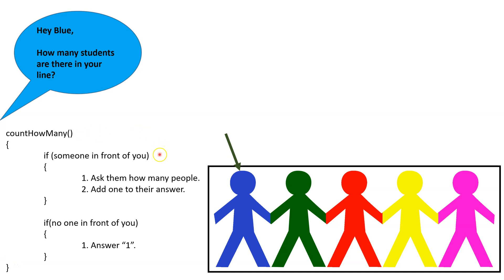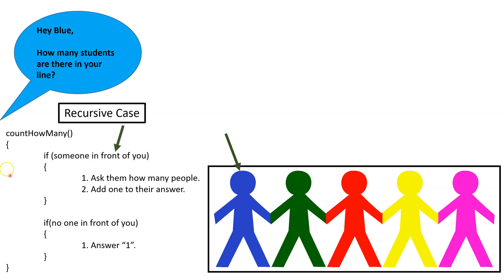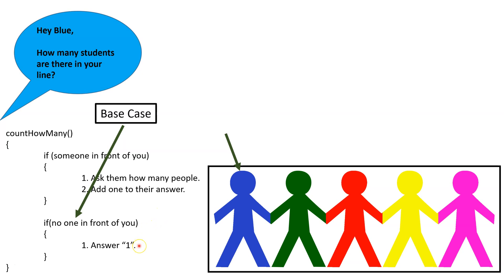The first part is: if there is somebody in front of you, you ask them how many people are in their shorter line. Once they answer, you add one to their answer. This is called the recursive case, because it ends up calling the algorithm 'count how many' again. On the other hand, if there is no one in front of you, you simply answer one, because that is the number of people in your line — one, which is yourself. We call this the base case, because it does not call the algorithm again.